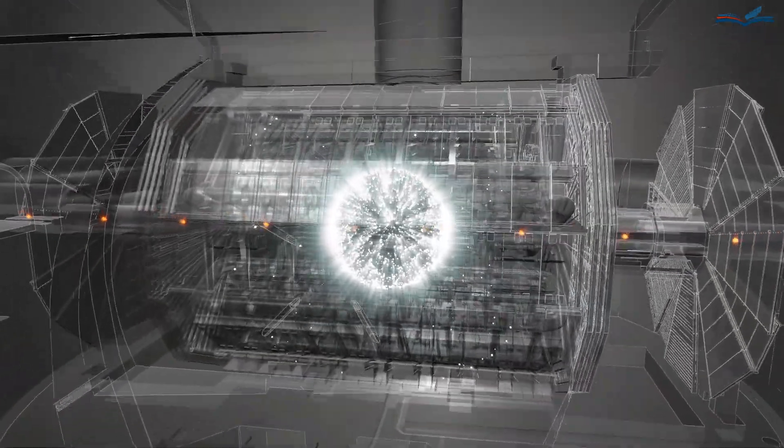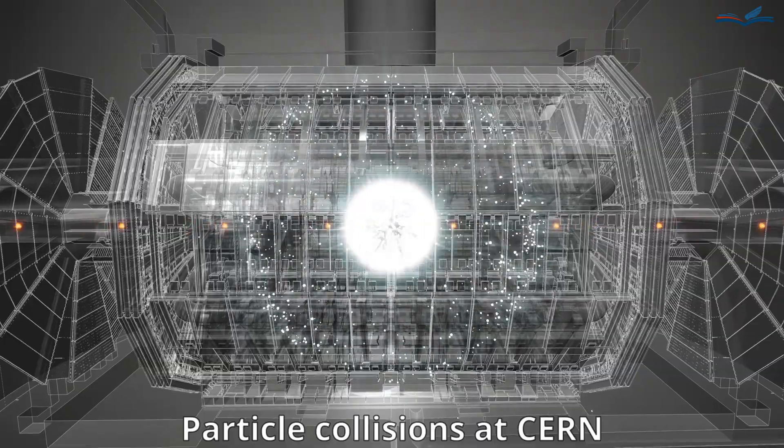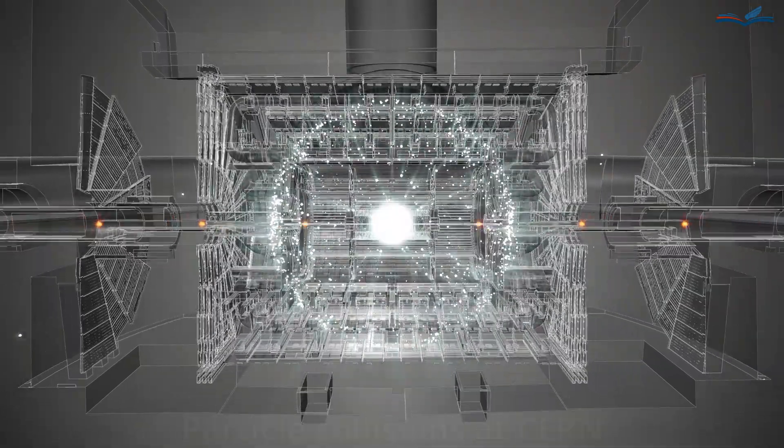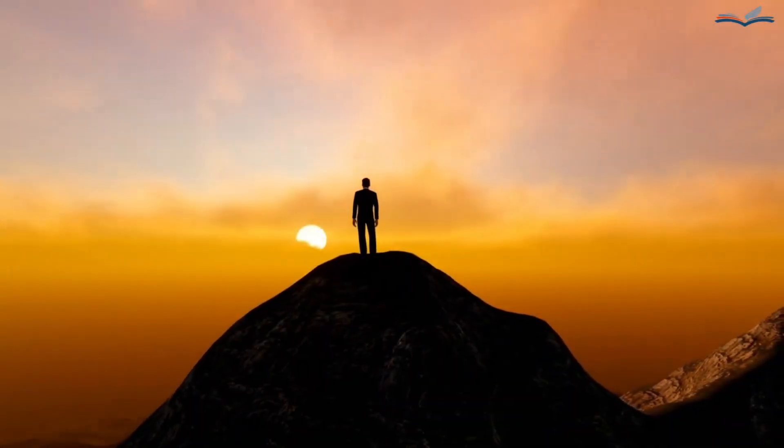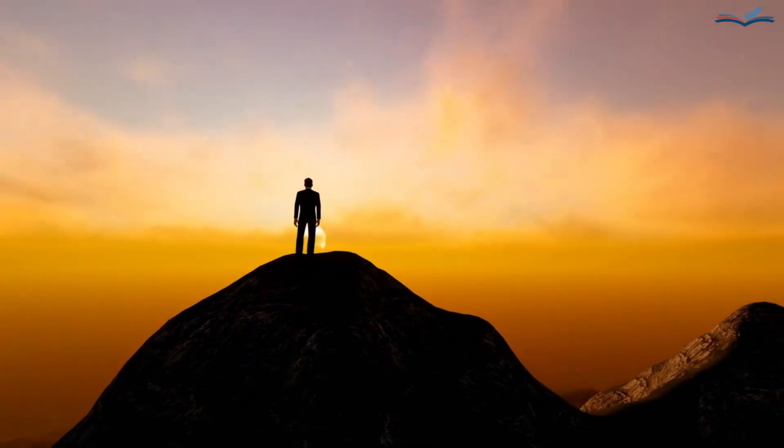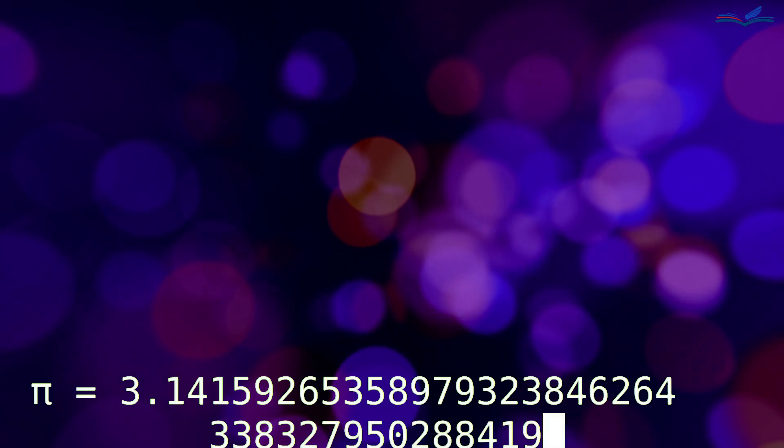What lies beyond these 16 decimal places, in the seemingly infinite sequence of random numbers that make up the constant pi, remains unknown. If pi holds a secret and encodes information, then its infinite sequence of digits is the perfect place for it. The 200 trillion decimal places of pi that have been discovered contain approximately 84 terabytes of actual data.